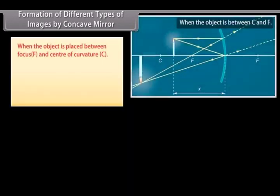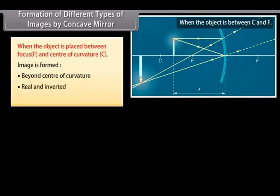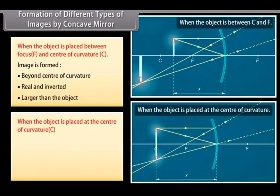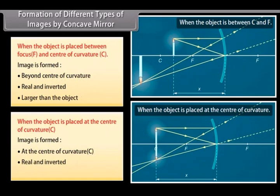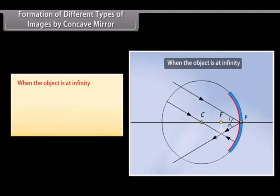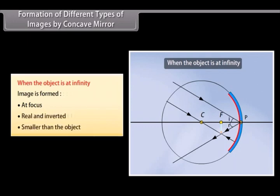When the object is placed between focus F and center of curvature C, the image is formed beyond the center of curvature — it is real and inverted, and larger than the object. When the object is placed at the center of curvature C, the image is formed at the center of curvature C — it is real and inverted, and the same size as the object.